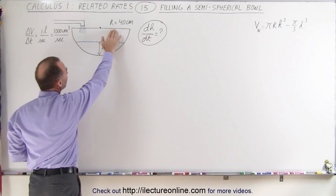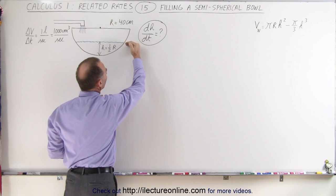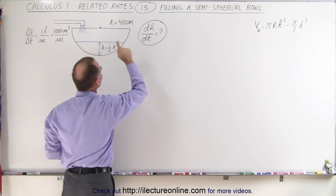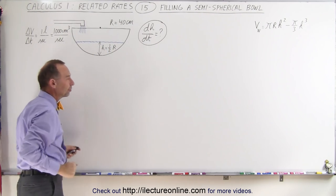The radius of the bowl is 40 centimeters, and we want to know the rate at which the height of the water in the bowl is rising when the height of the water is half the radius of the bowl.